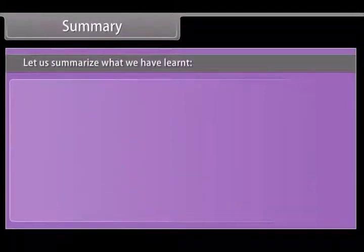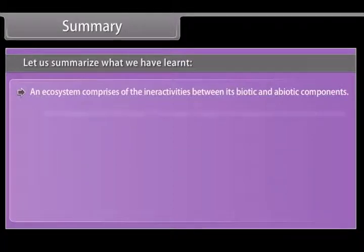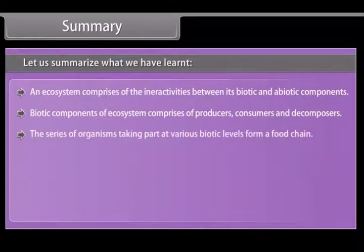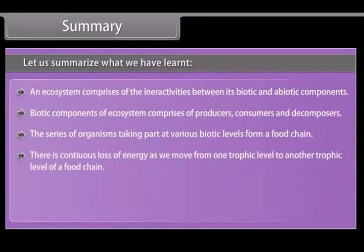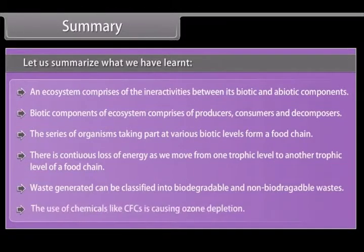Summary. Let us summarize what we have learnt. An ecosystem comprises of the interactivities between its biotic and abiotic components. Biotic components of ecosystem comprises of producers, consumers and decomposers. The series of organisms taking part at various biotic levels form a food chain. There is continuous loss of energy as we move from one trophic level to another trophic level of a food chain. Waste generated can be classified into biodegradable and non-biodegradable wastes. The use of chemicals like CFCs is causing ozone depletion.